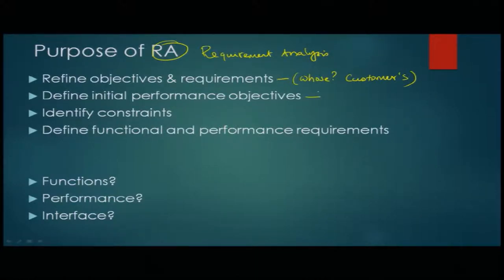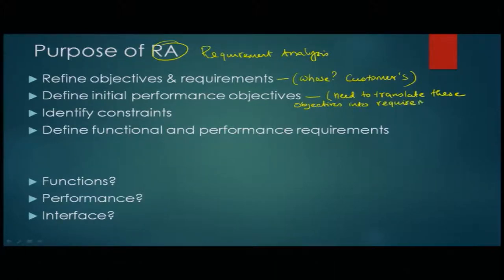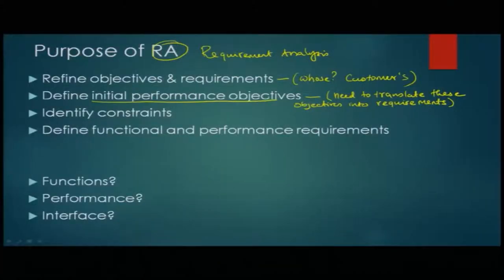The second purpose is to define initial performance objectives. We need to translate these objectives into requirements — specifically measurable requirements. These should be quantifiable and measurable; using loosely worded terms like 'sufficient' is not enough. It should be a number that is as much as possible quantifiable and verifiable. The initial performance objectives are defined in order to translate them into requirements.